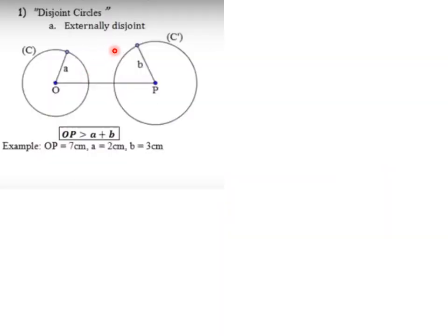The first relative position is externally disjoint circles, where there are no common points between the two circles. The rule says: OP is greater than A plus B, where OP is the distance between the two centers, A is the radius of the first circle, and B is the radius of the second circle.